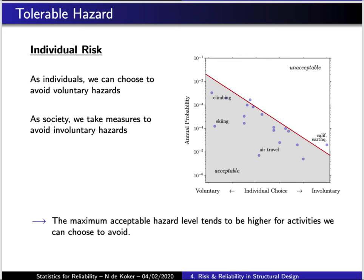Let's first take a look at the risk tolerance that we have as individuals and as a society — that is, what levels of hazard are we willing to tolerate? Shown on the plot are various annual probabilities of an individual dying during a particular activity, arranged according to how voluntary that activity is — how much choice the individual has in participating. On the left are relatively risky voluntary activities like mountain climbing or skiing, and on the right are activities you have very limited choice in, such as being in an earthquake.